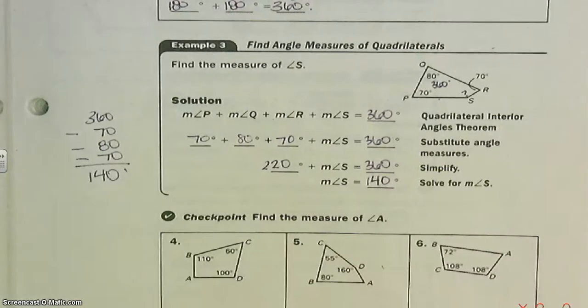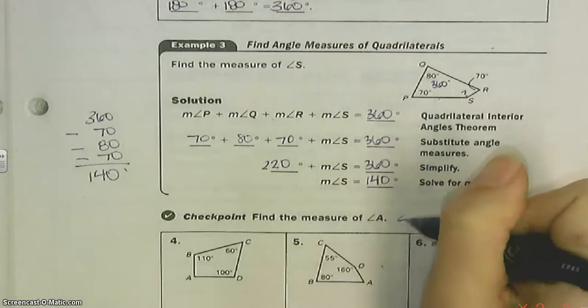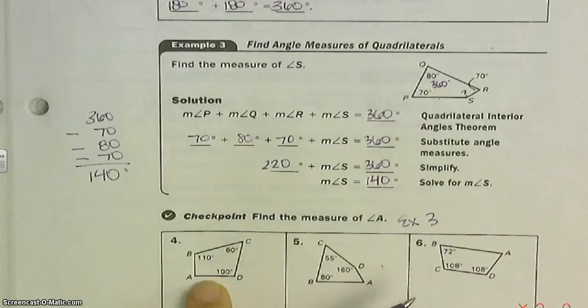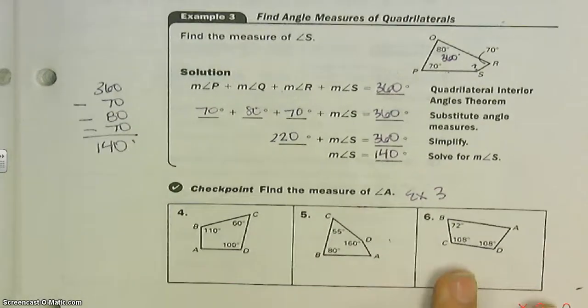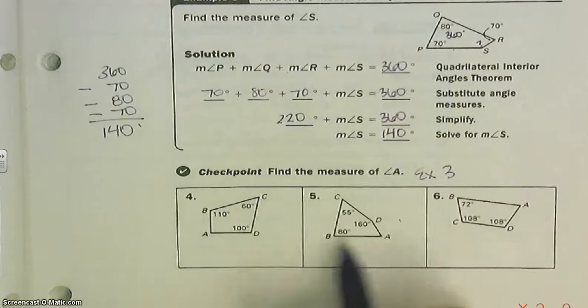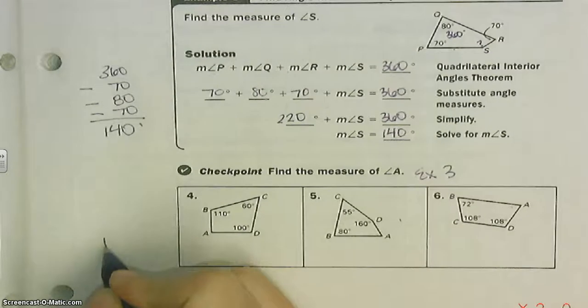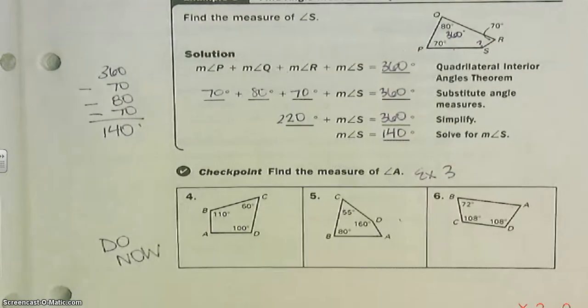So we're looking for 360. This is just like example three. There's 360 degrees total. How much am I missing? That's what you're—how much are we missing in angle A? Do this now.